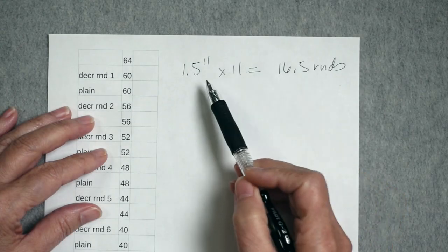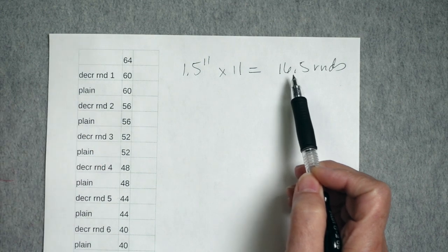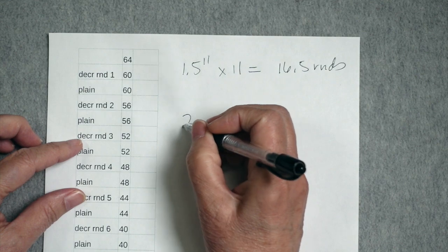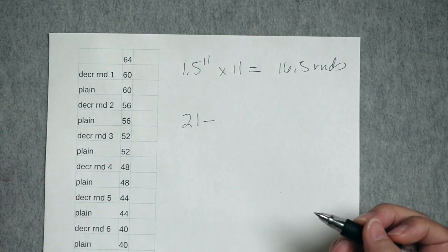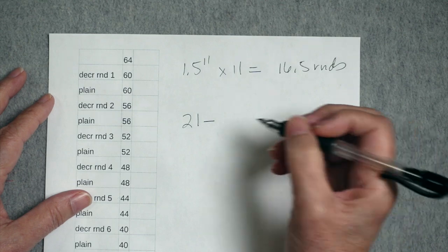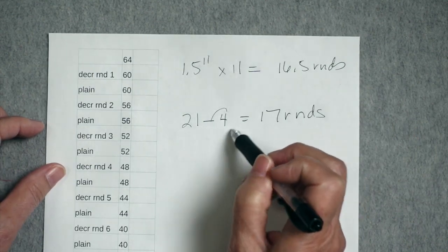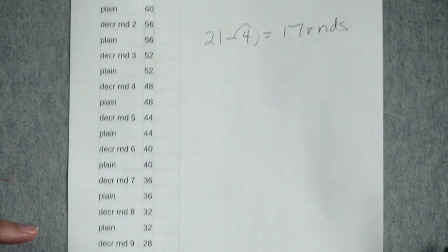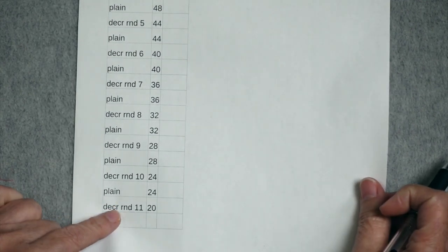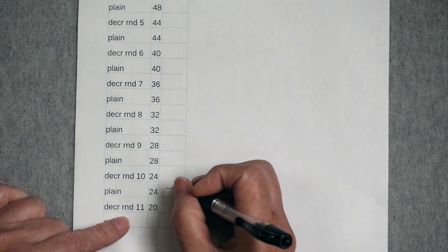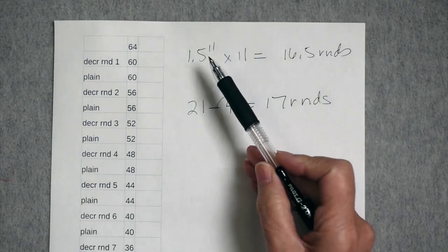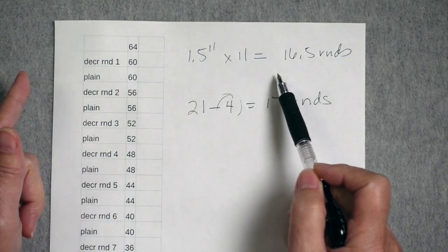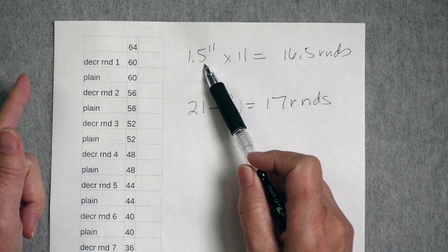So for Rosemary, I want to make a sock toe that's only 16 or 17 rounds long. And so I need to subtract four or five rounds. Let's subtract four rounds. So I want to get rid of four plain rounds. So in this case, when I want to shorten the toe, I'm going to start at this end. I want to eliminate those four plain rounds. I would start her sock toe when the sock length is one and a half inches shorter than what I actually want.